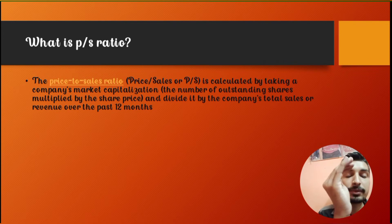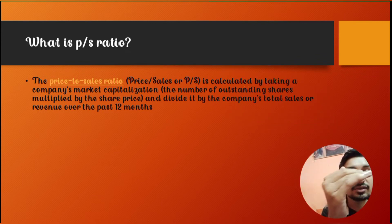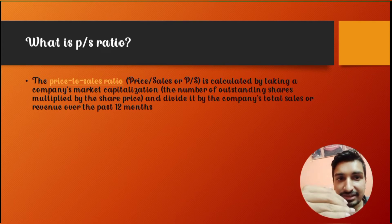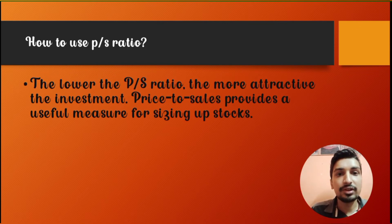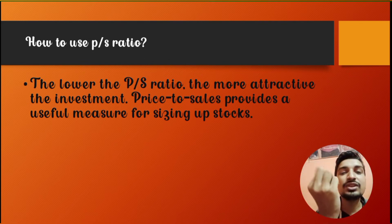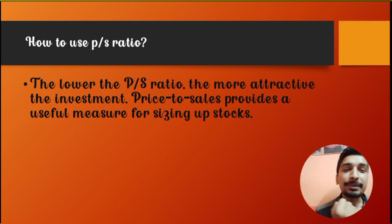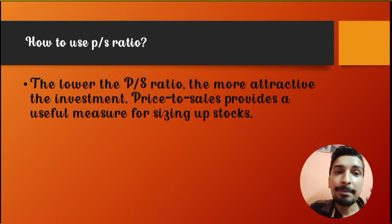If the price to sales ratio is less, it means the denominator — the number of sales — is large. If the number of sales is more, the company is good and the price to sales ratio will be less. A lower price to sales ratio means the investment is more attractive. It means the company is making a lot of sales, even if the profit may be less.